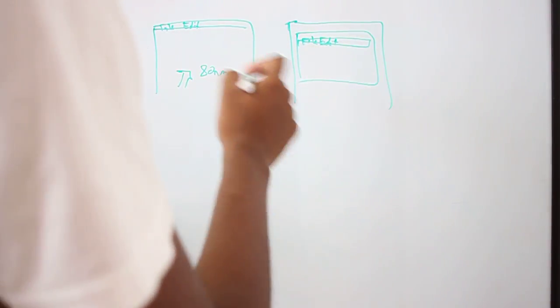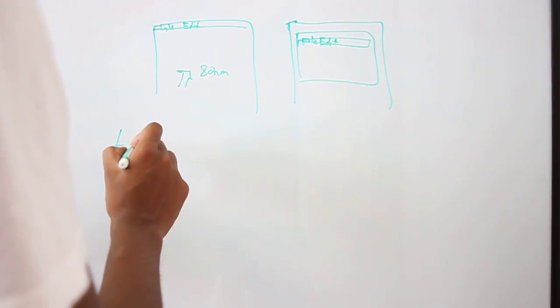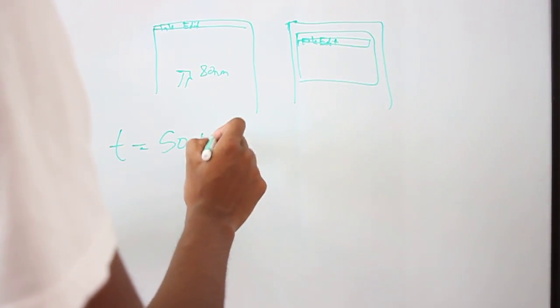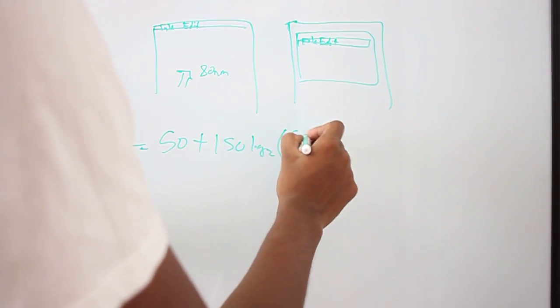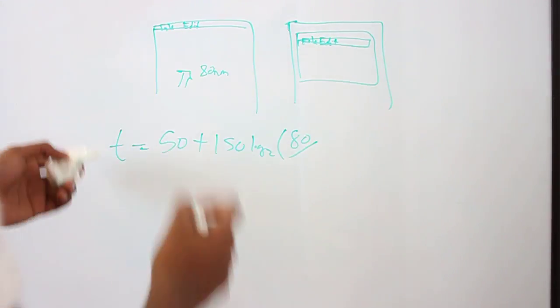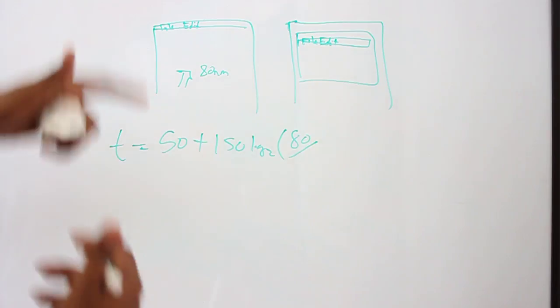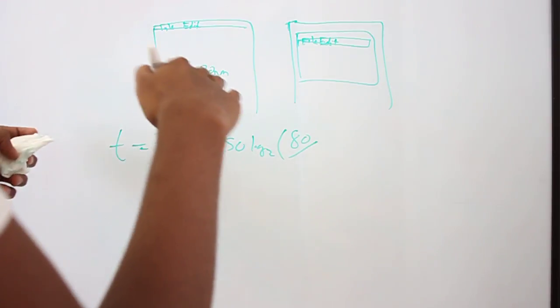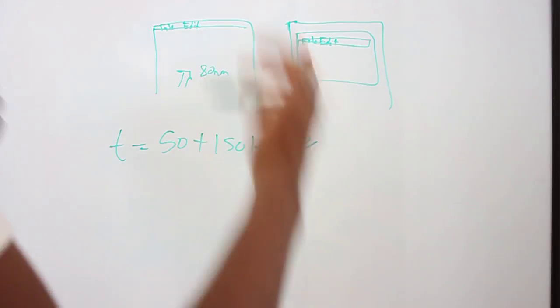So let's say you have a mouse cursor that's 80 millimeters away. And let's calculate the time it takes on a Mac. It would be 50 plus 150 log base 2 of 80. And what exactly is the size of the target here? Because it's right at the edge of the screen, the size of the target is actually huge, because the user could overrun the screen and he would still be at the same position, because you can't go over the screen.